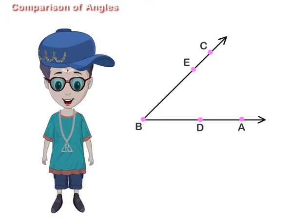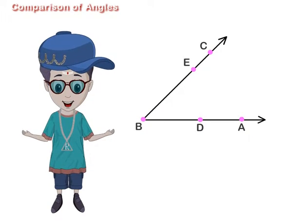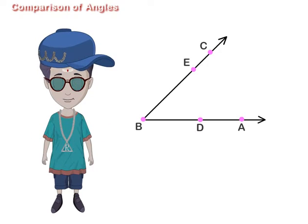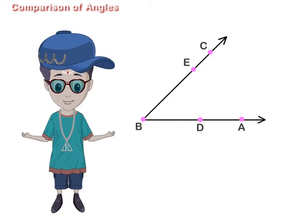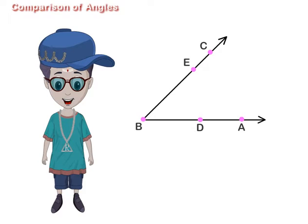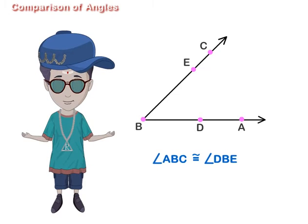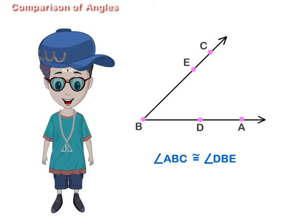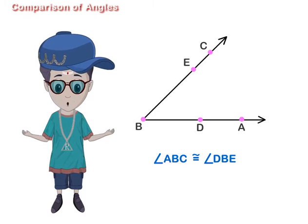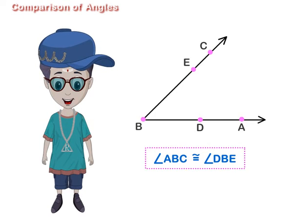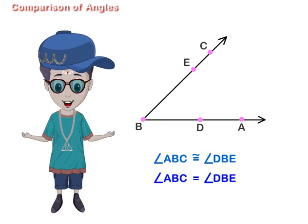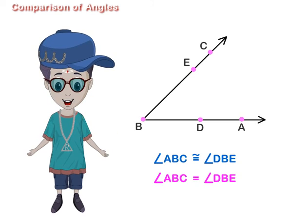If two angles are such that neither of them is greater than the other, they are said to be equal or congruent to each other. Here, angle ABC and angle DBE are congruent angles. In symbols, we write it as shown. Generally, we write it in the standard notation.